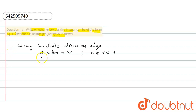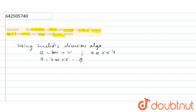Now, if A equals 4m plus r — this is our standard expression. We will put r equal to 0, r equal to 1, r equal to 2, and r equal to 3.